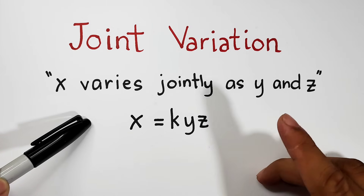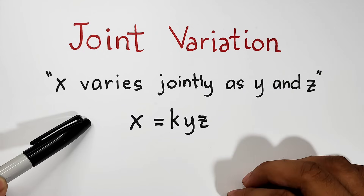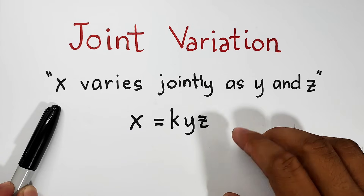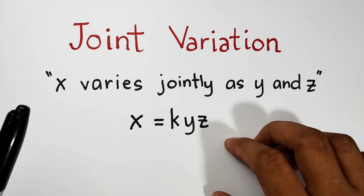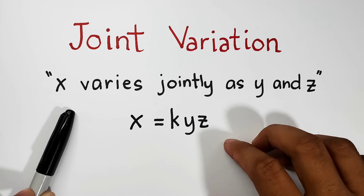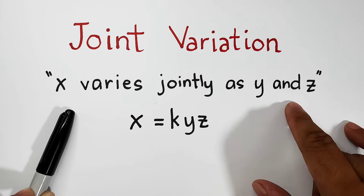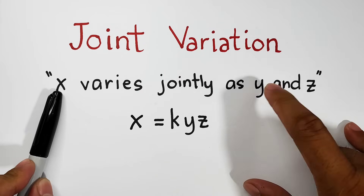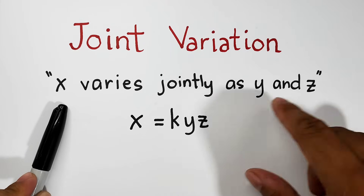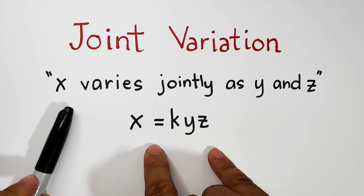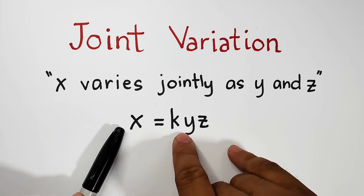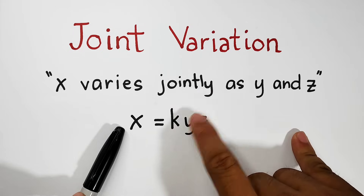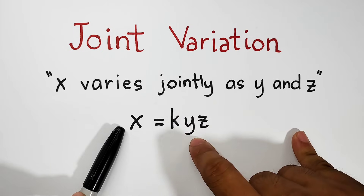I hope you can understand the same concept of joint variation. So what we have here is an example statement of joint variation. We have x varies jointly as y and z. As you can see, we have three variables: x, y, and z. And this one is translated as the equation x is equal to k times y times z, where k is the constant of the joint variation.